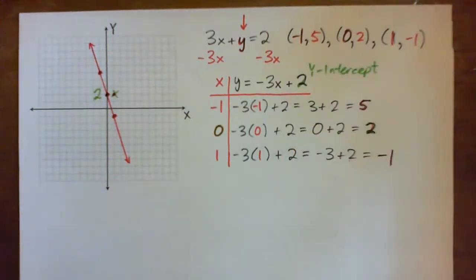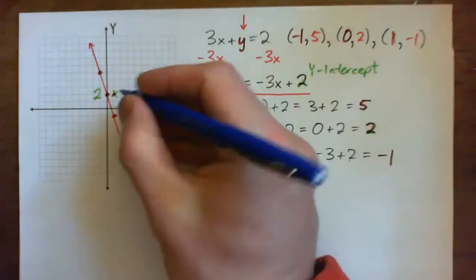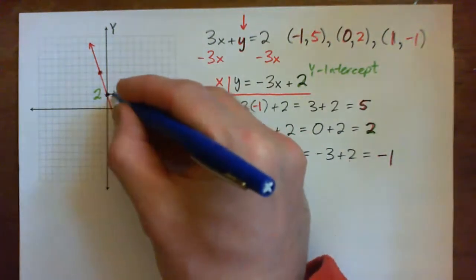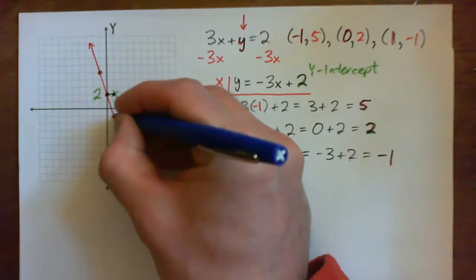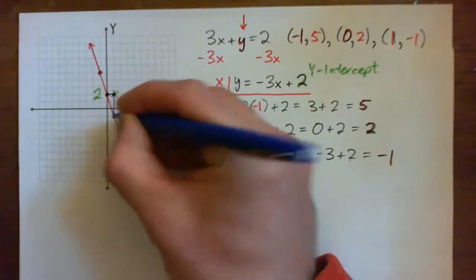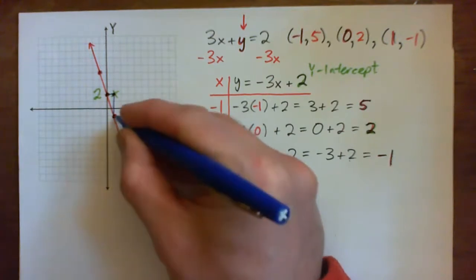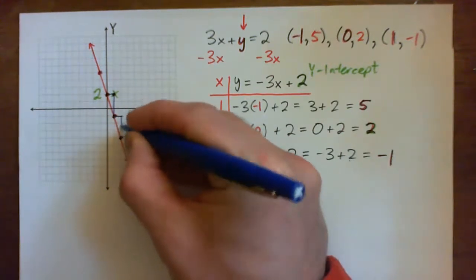The other thing I want to point out to you is that if you take any point, go over 1, and then be directly above another point, you'll be going down 3. So, for example, between these two points, I can go over 1 and down 3.